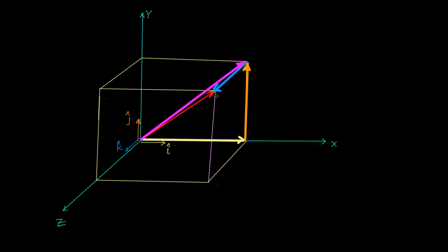This is actually valid for any number of vectors. If I have 10 vectors and arrange them head to tail by shifting them parallel to themselves, and join the tail of the first to the head of the last, I would get the resultant of all those 10 vectors.